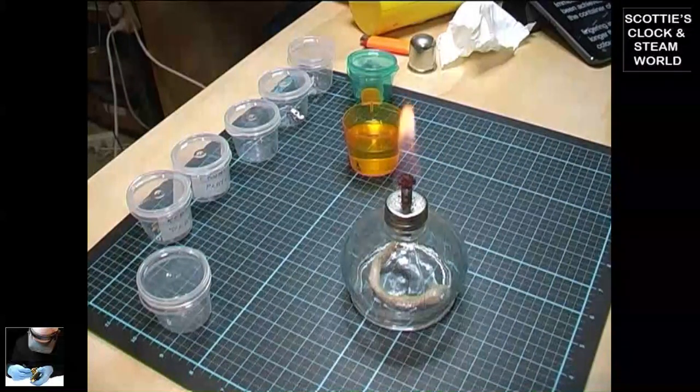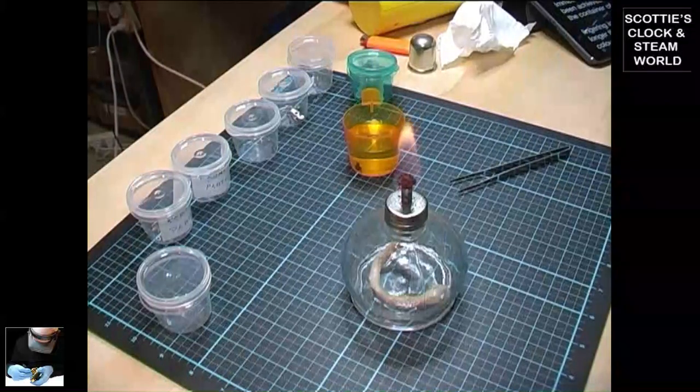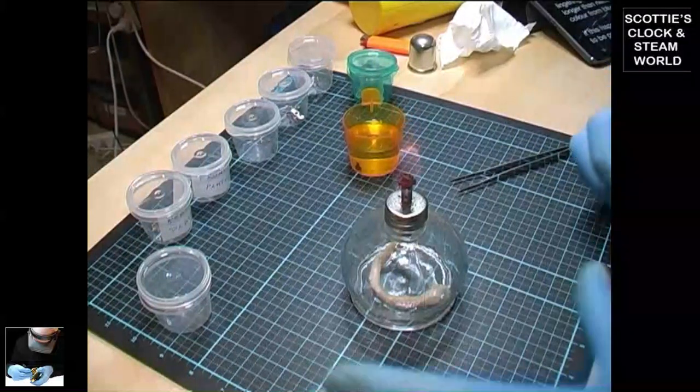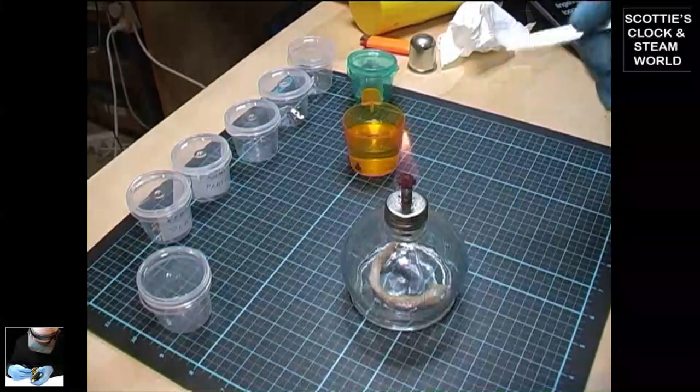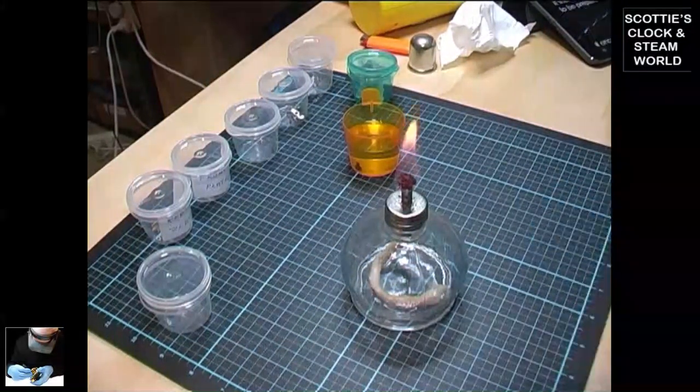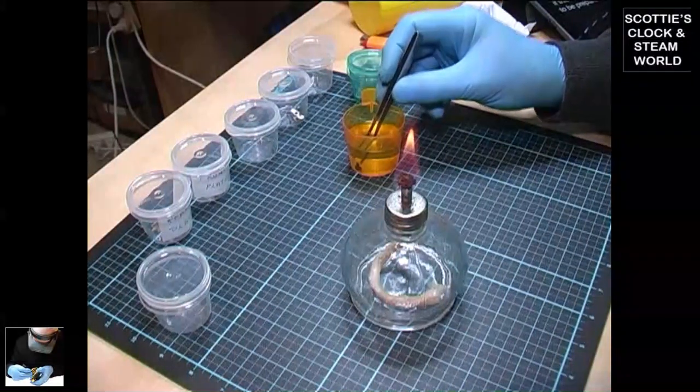Immediately the desired color has been achieved, drop the screw into the container of methylated spirits. Lingering in the flame for a fraction longer than necessary will turn the color from blue to grey. If this happens you will have to prepare the screw all over again.